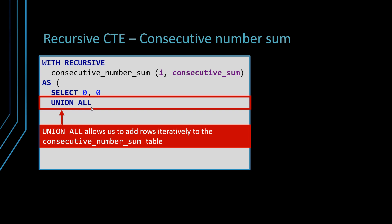now we are going to add the second, the third, the fourth iteratively. So we're using Union All for that. We don't use Union because Union tries to remove duplicates.